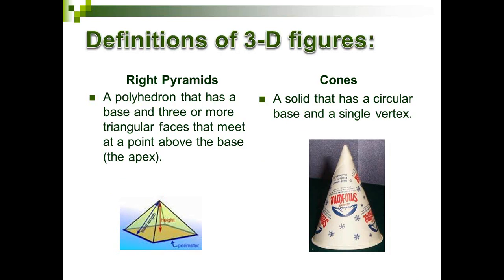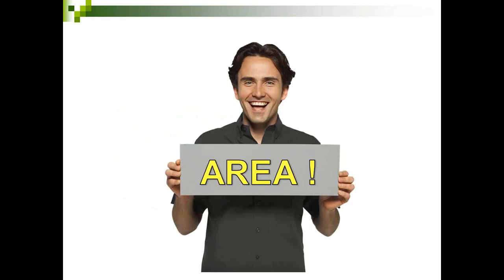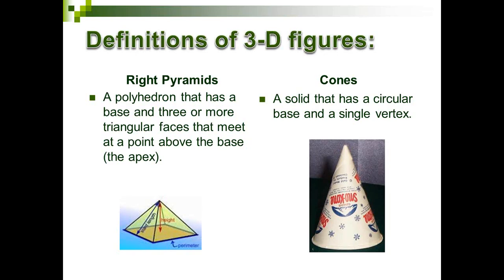There is a variety of three-dimensional figures on the 2014 GED formula sheet. A right pyramid is a three-dimensional object with many flat faces and straight edges with corners that meet at a central point above, called an apex. A cone has a circular base and one vertex where they all meet together. A cylinder is a curved surface with parallel circular bases at each end.